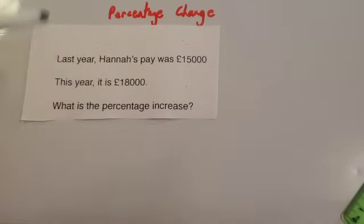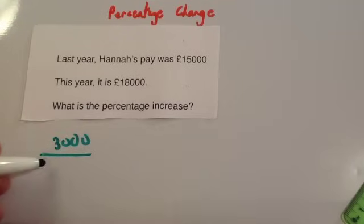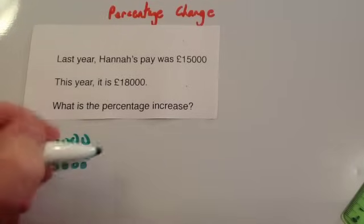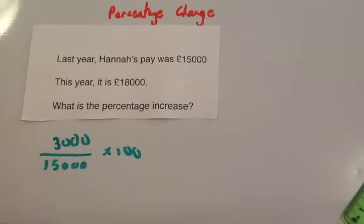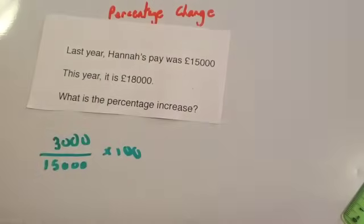So the change is equal to 3,000. The original was 15,000. And then times 100. Now you can do that on your calculator if you wish. You could do 3,000 divided by 15,000 times 100. And you get 20%. So the answer is 20%.